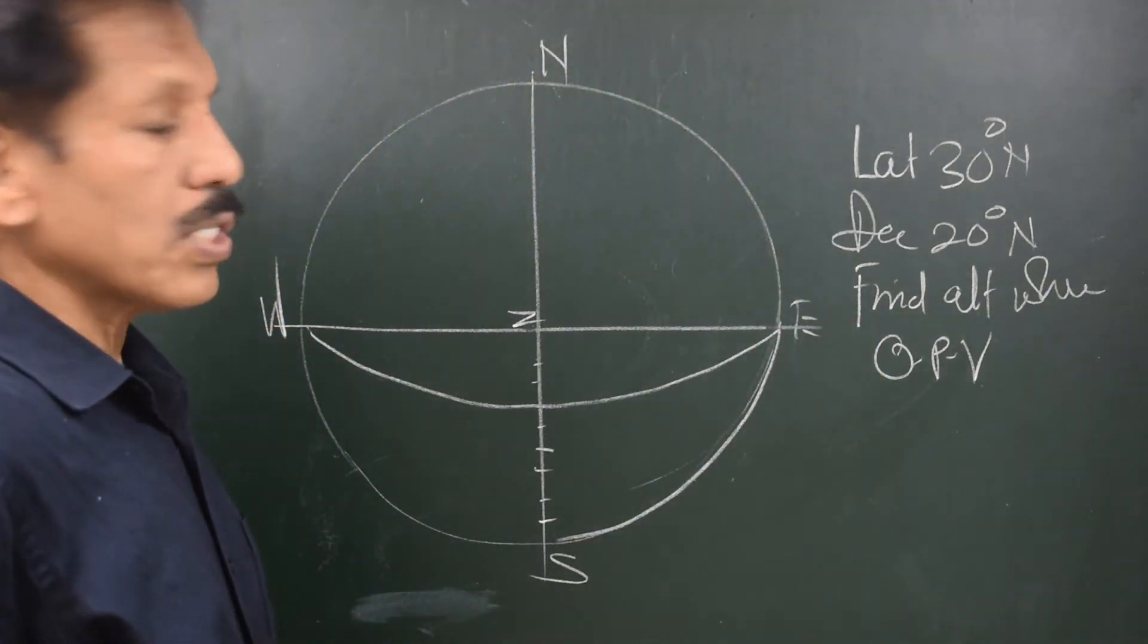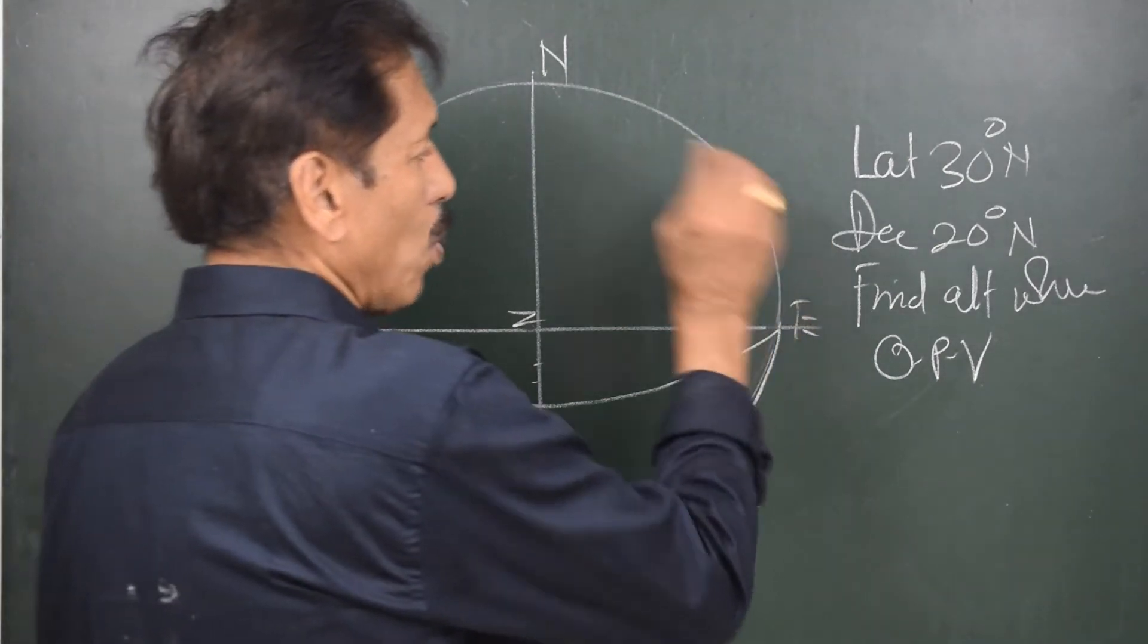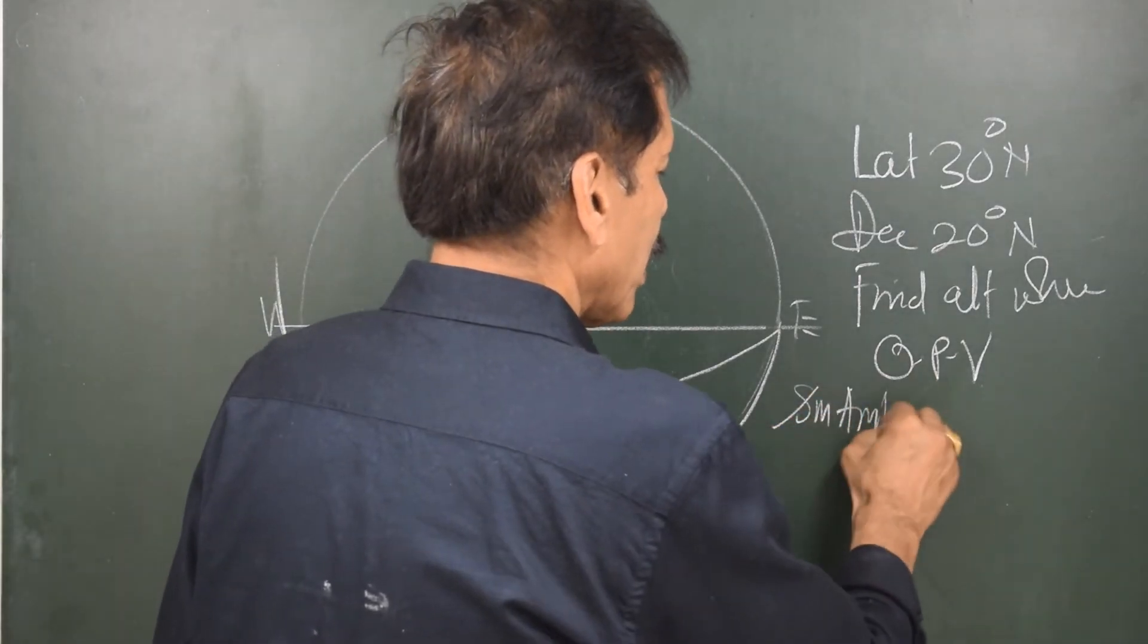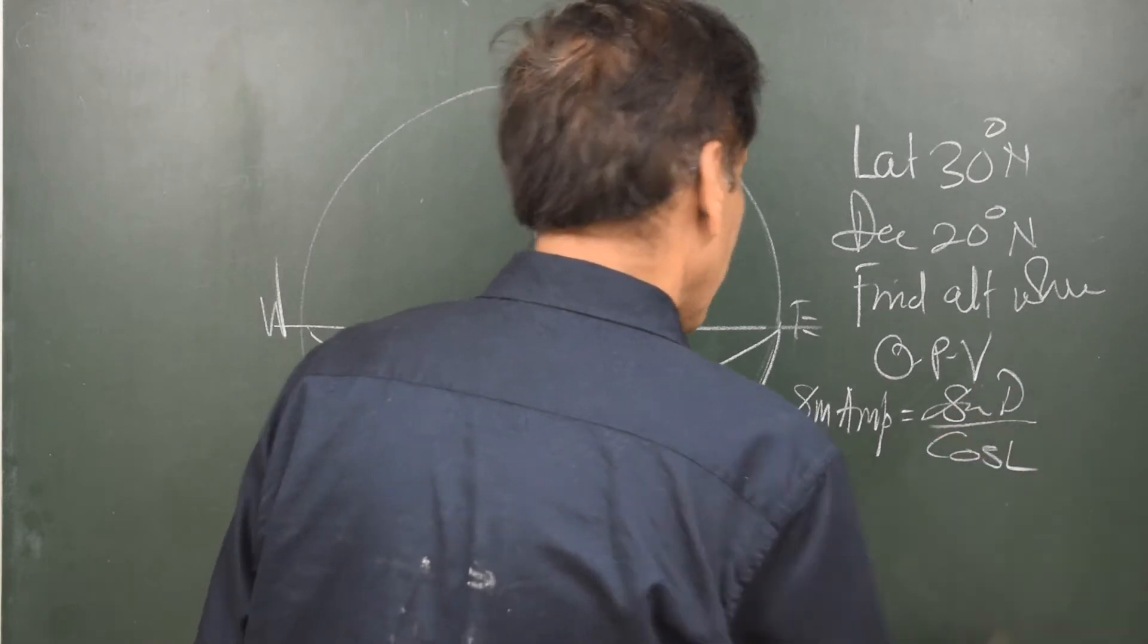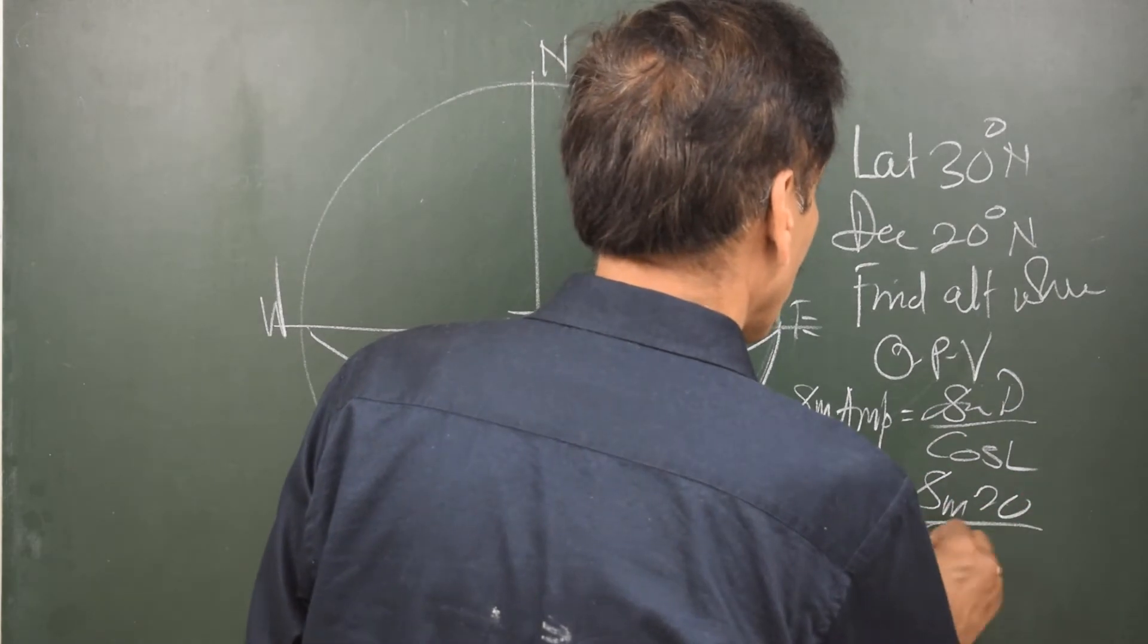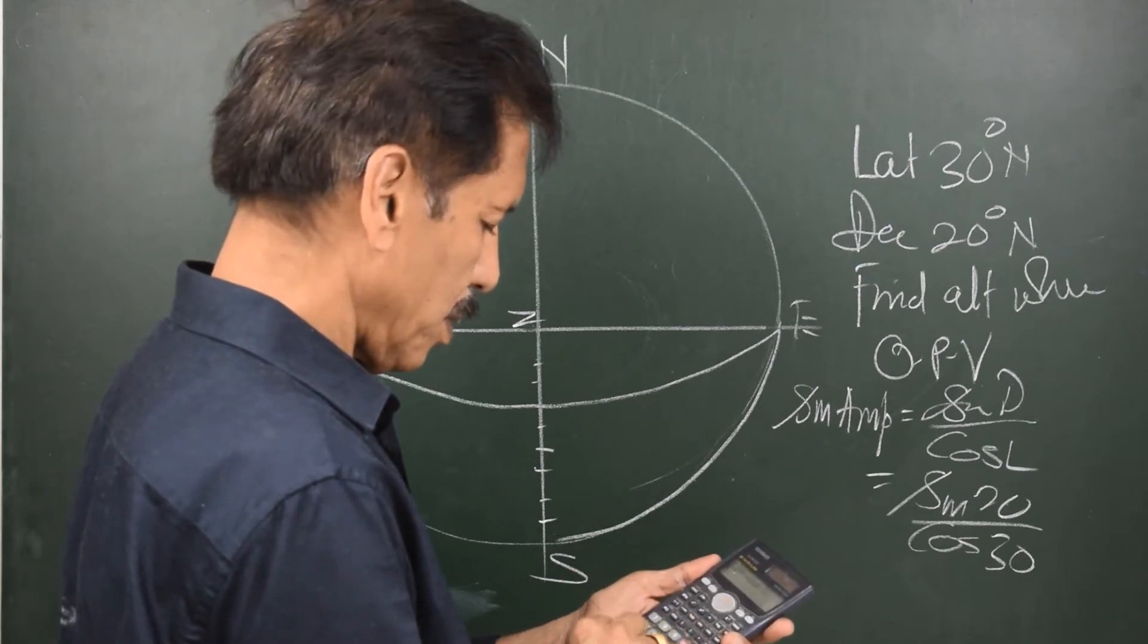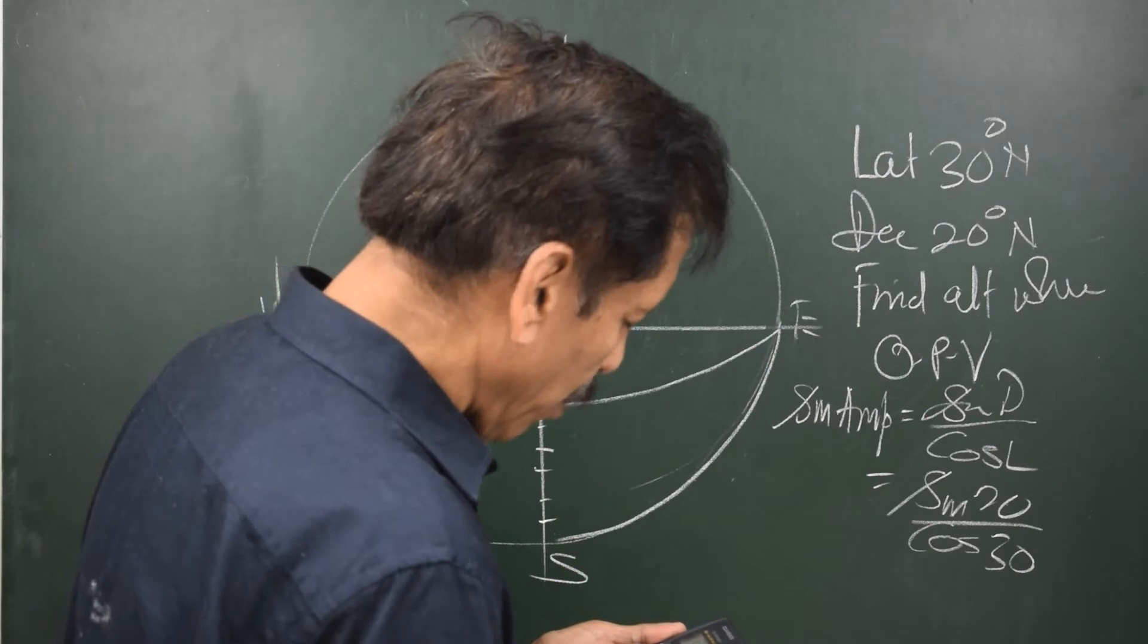Declination 20 degrees north. Basically, if we want to know at what point the body would rise, I have to use the amplitude formula that is sine amplitude is equal to sine declination upon cos L. That means sine 20 upon cos 30. So sine 20 cos 30 degree equal to 29.3 degrees.